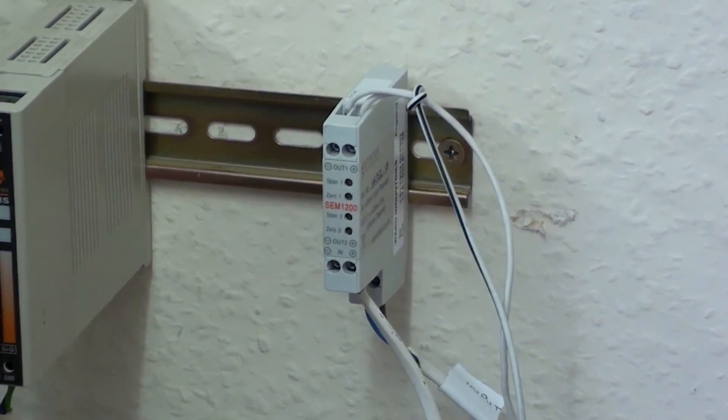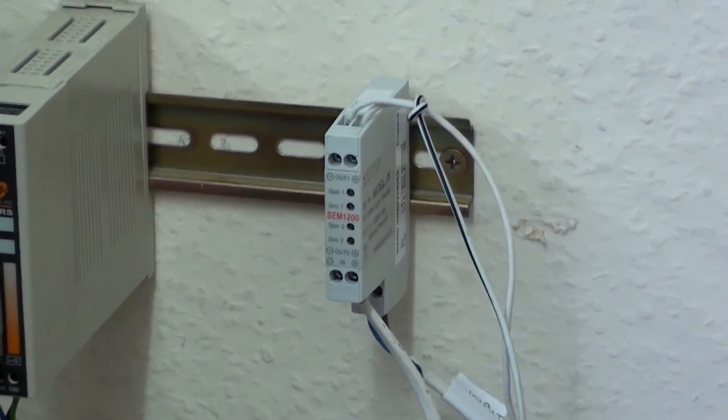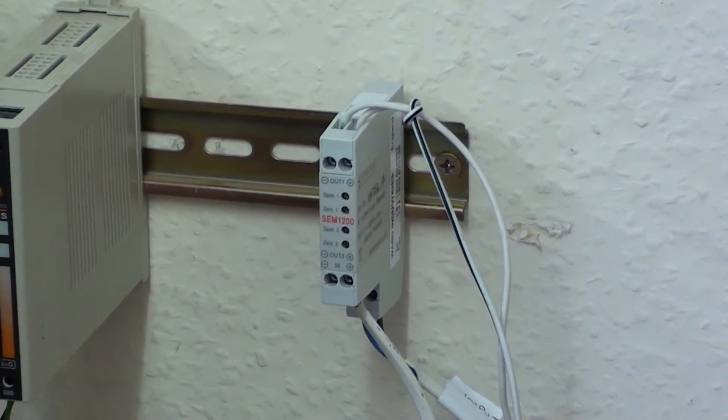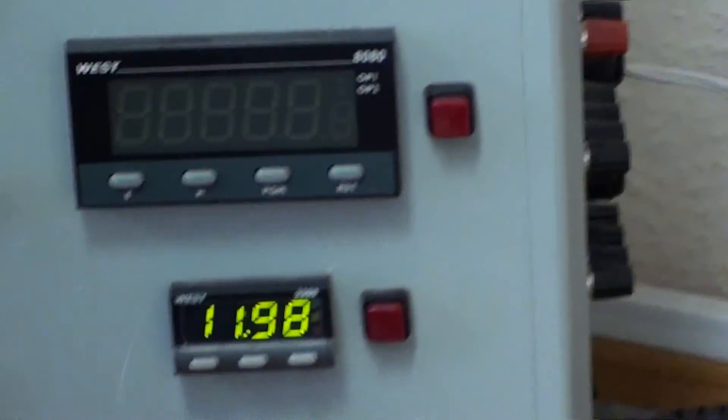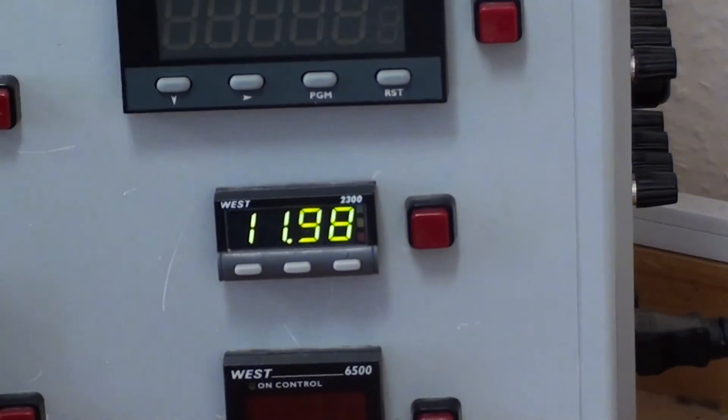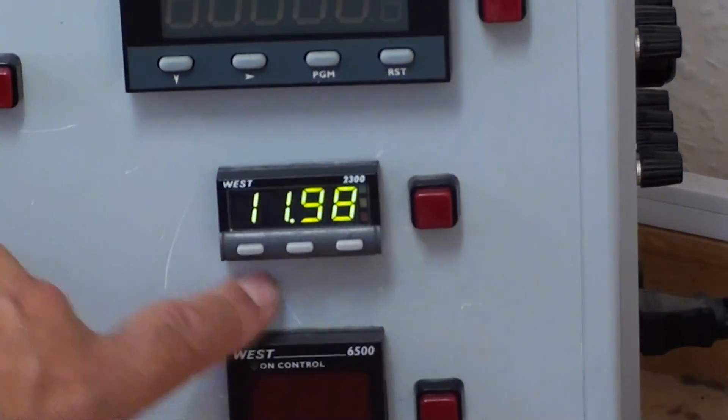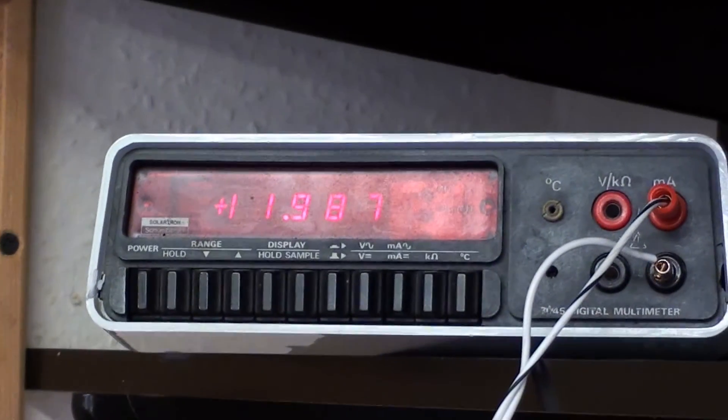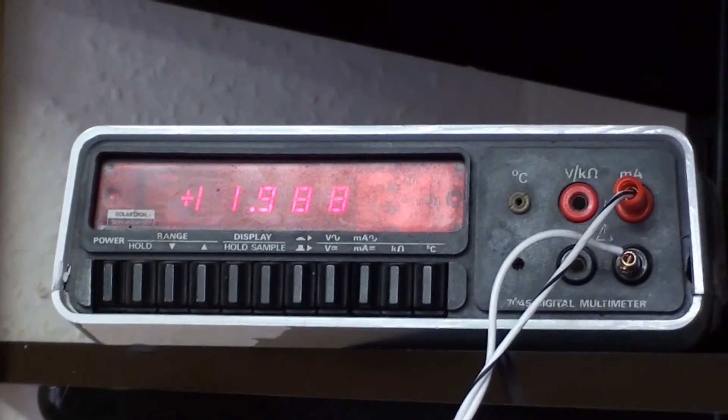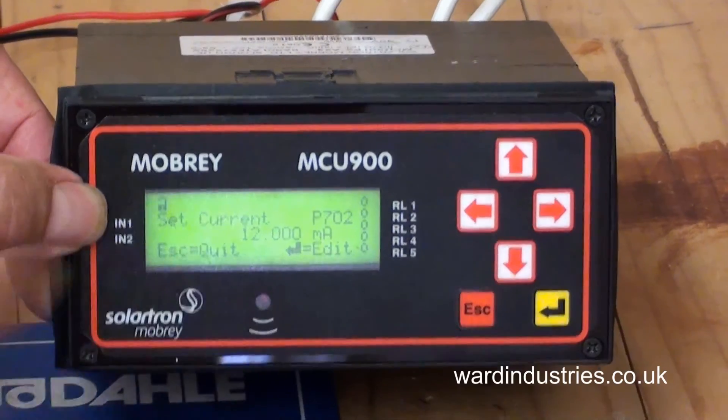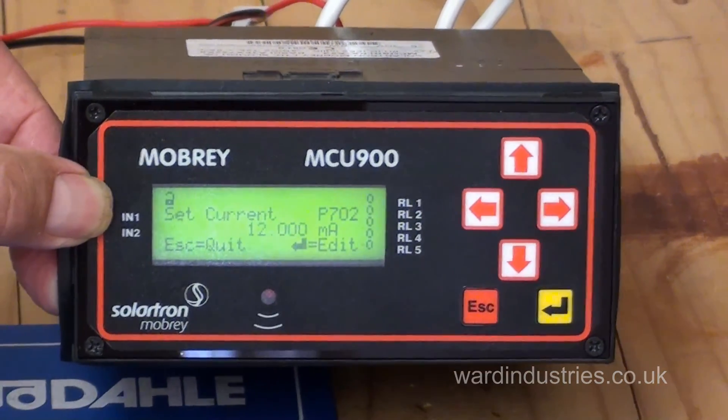That gives a 4 to 20 milliamp output signal, isolated output signal to two loops, but those loops must be externally powered, typically with a 24V power supply. Here we can see one digital indicator and the value on the multimeter, two output signals, and it's the same value of the input signal that's being transmitted by this control unit.